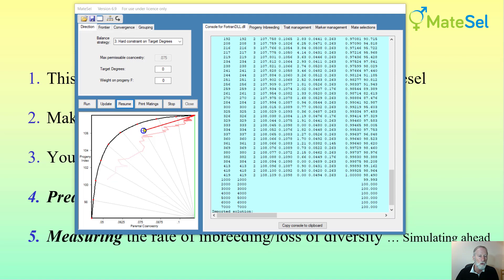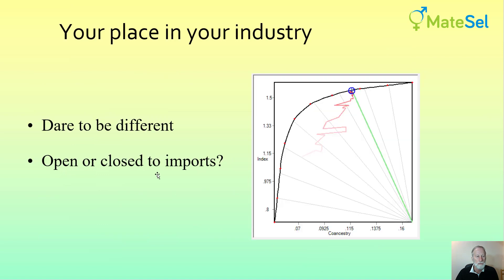Now we want to move on to look at your place in your industry. One component is dare to be different, where by having a more conservative approach aiming here and having candidates that are quite different to what everyone else is using, you can make some compromise in genetic gain but have a more diverse portfolio, which in the long run may be valuable. I've seen this work in particular for one breeder who is very progressive.